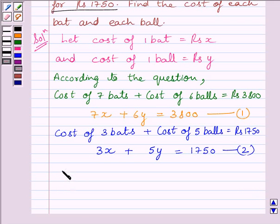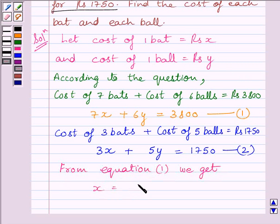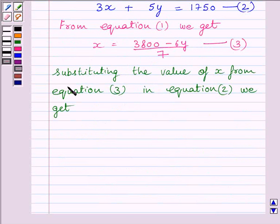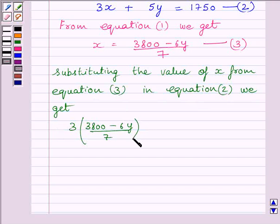Now from equation 1 we get X is equal to Rs. 3800 minus 6Y upon 7. Let us name this equation as 3. Now we will substitute this value of X in equation 2. Substituting the value of X from equation 3 in equation 2, we get 3 multiplied by (3800 minus 6Y upon 7) plus 5Y is equal to Rs. 1750.